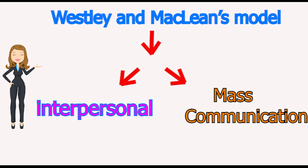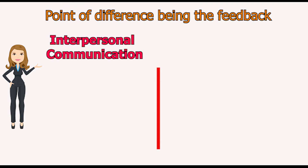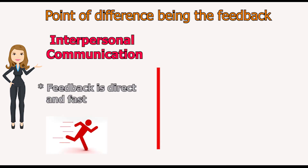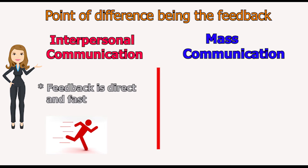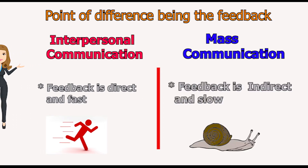Please note: Wesley and McLean's model can be applied in two contexts — interpersonal and mass communication. The point of difference is feedback. In interpersonal communication, feedback is direct and fast. In mass communication, feedback is indirect and slow.